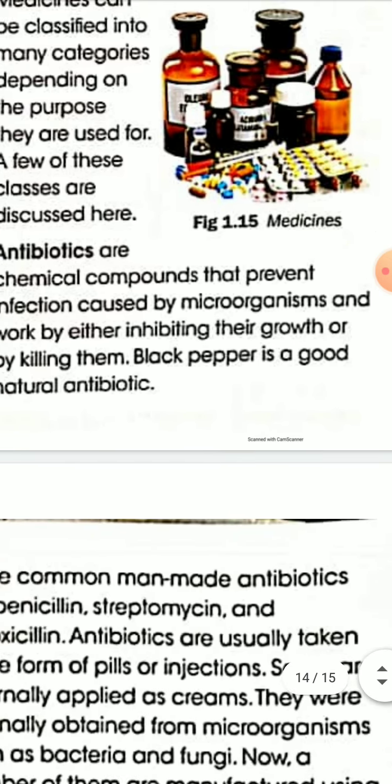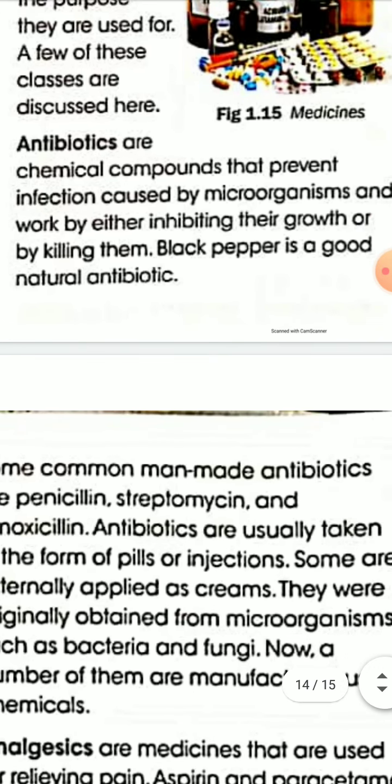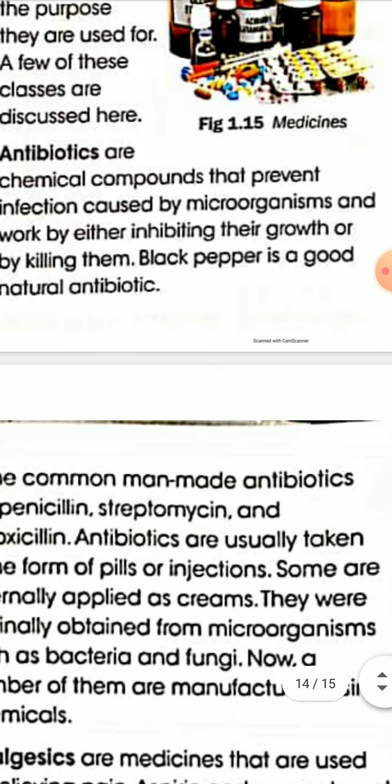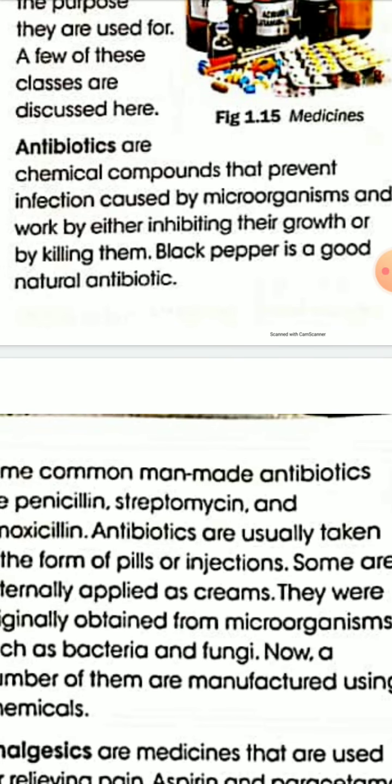The first type of medicine is antibiotics. Antibiotics are chemical compounds that prevent infection caused by microorganisms, and work by either inhibiting their growth or by killing them. For example, black pepper is a good natural antibiotic.